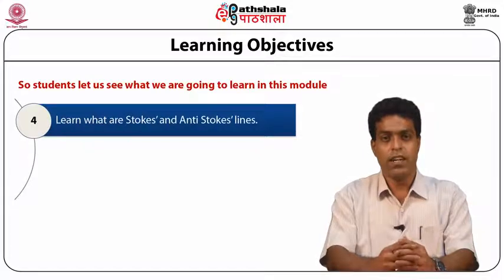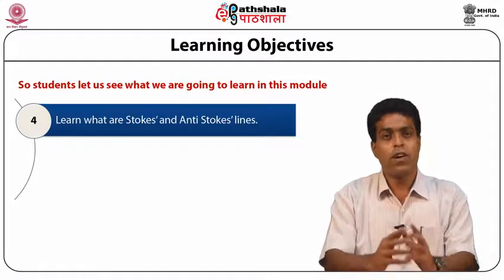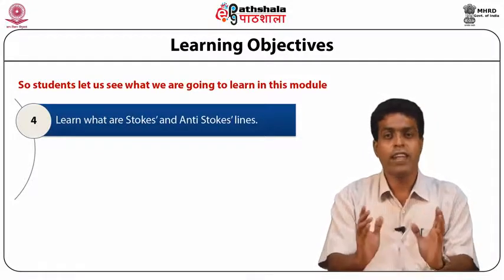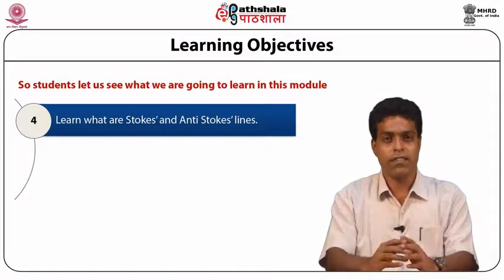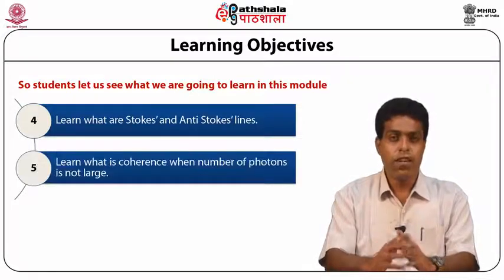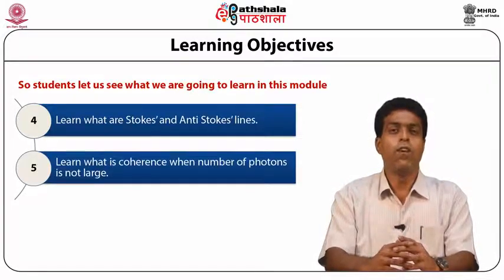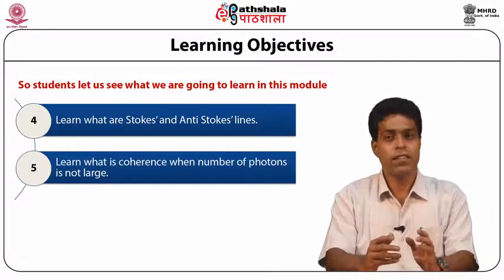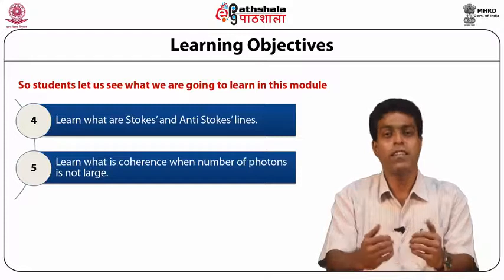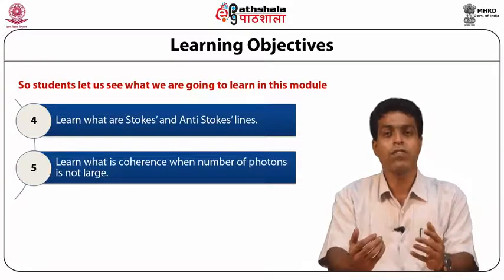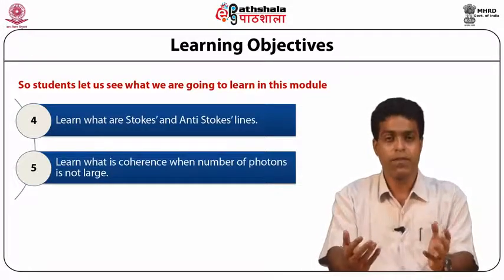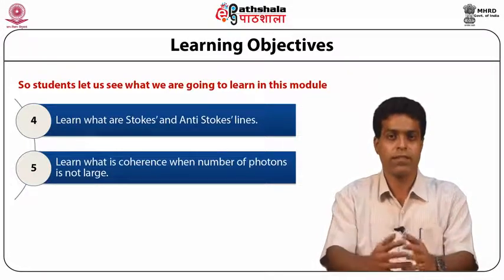We will learn what the Stokes and the anti-Stokes lines are. We will learn what coherence is, and when the number of photons is not large, what happens to the coherence.